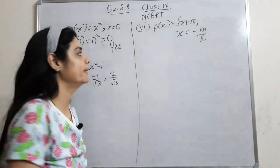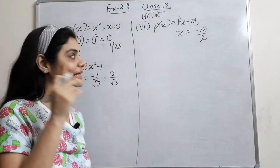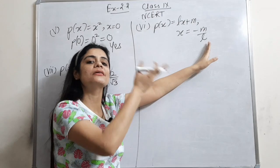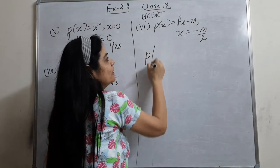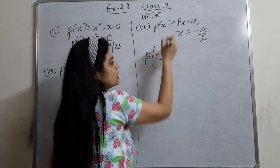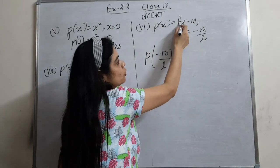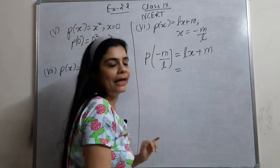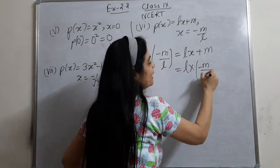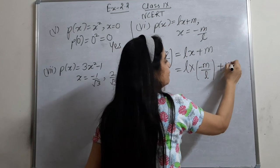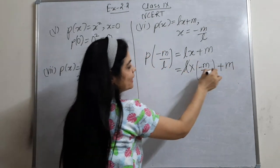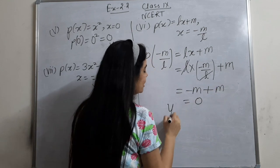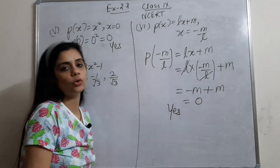Sixth part: don't be scared by such questions. Just put the given x value — that's all. I put x = -m/l into p(x) = lx + m. So l into (-m/l) plus m: l cancels with l, giving minus m plus m, which is 0. So yes, -m/l is the zero of the polynomial.